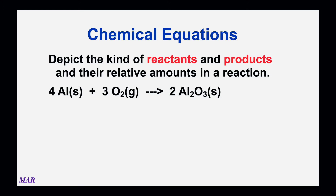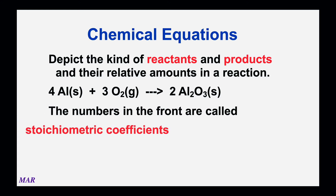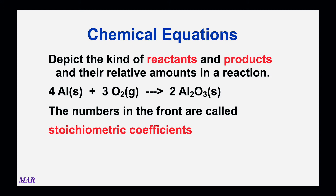Those numbers in front of the aluminum, the oxygen, and the aluminum oxide are called stoichiometric coefficients. You don't have to spell that. Stoichiometric coefficients are relative amounts — you can think of it as four parts aluminum reacting with three parts oxygen to make two parts aluminum oxide.